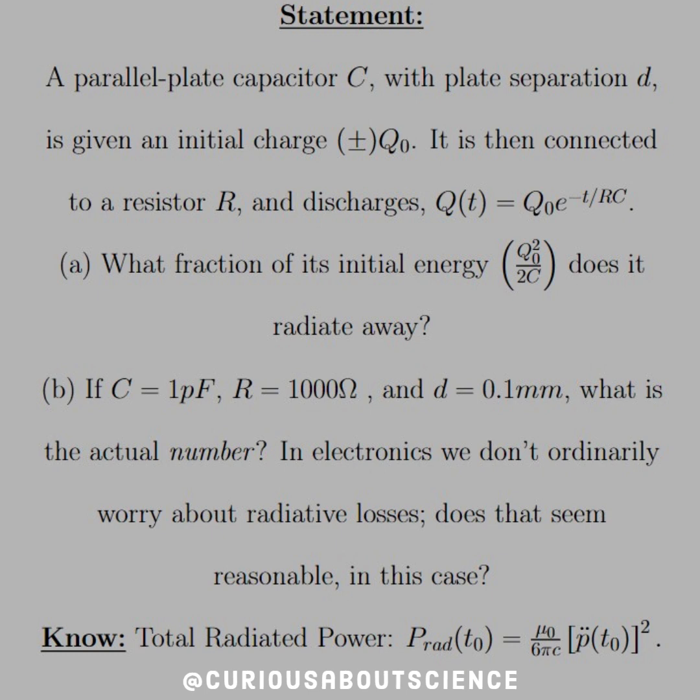Part (b): if C equals 1 picofarad and R equals 1000 ohms and D equals 0.1 millimeters, what is the actual number? In electronics, we don't ordinarily worry about the radiative losses. Does this seem reasonable in this case?